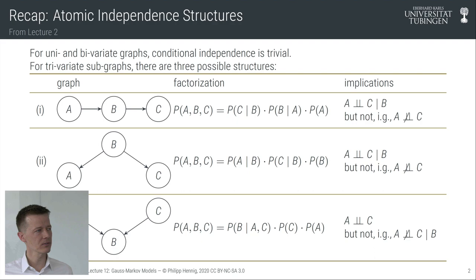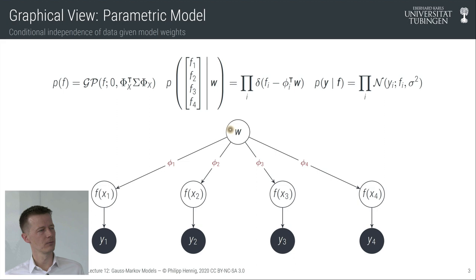If we assume the likelihood of individual observations factorizes over local Gaussian error terms created at each location, this corresponds to a graphical model which is an instance of the fan-out structure. As we saw in lecture 2, this structure implies that conditioned on b, a and c are independent — and that's exactly what we see here. Conditioned on the weights, the function values are independent of each other, and therefore the observations as well.